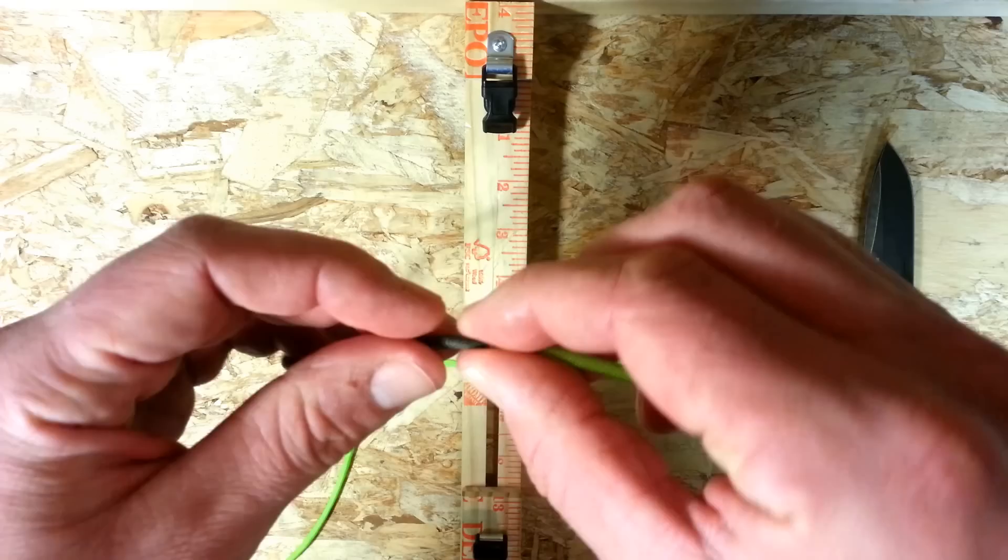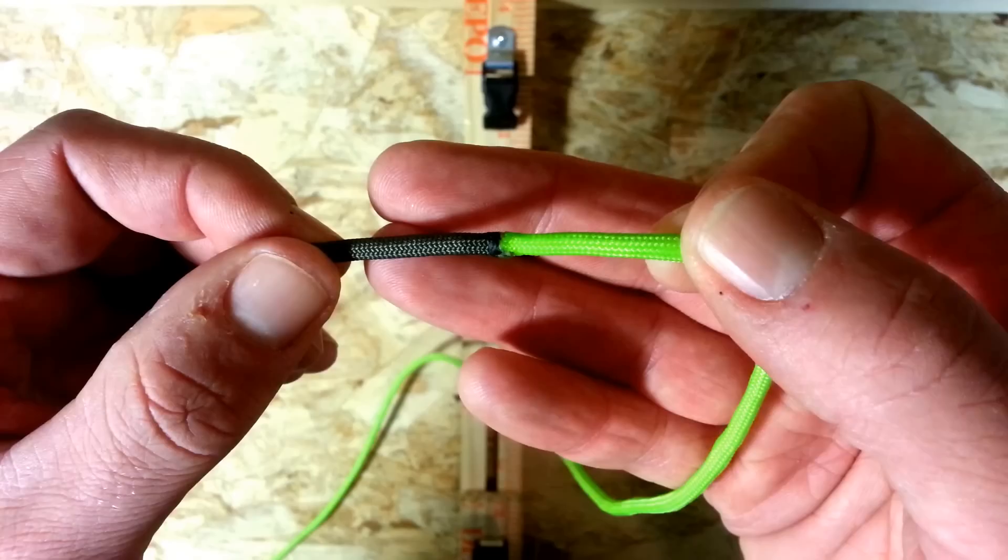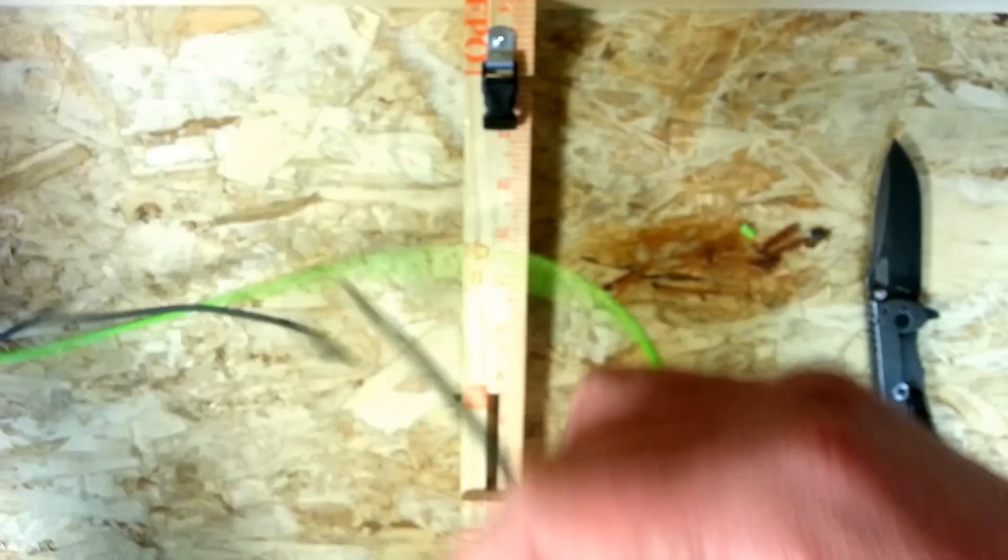I'm just going to lick my fingers because this is obviously quite hot because we've just melted it. And then you're just going to squeeze and tamp that together until you make yourself a nice join or something like that. There you go.